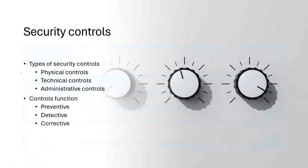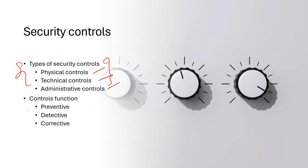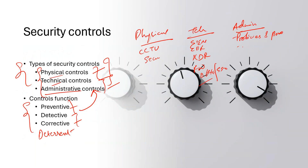When we talk about security controls, there are largely three types: physical controls, technical controls, and administrative controls. The control functions that work in conjunction with these types are preventive, detective, corrective, and deterrent — we'll be discussing all of those.